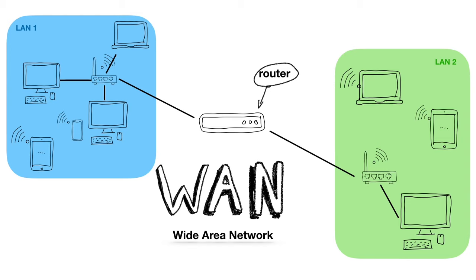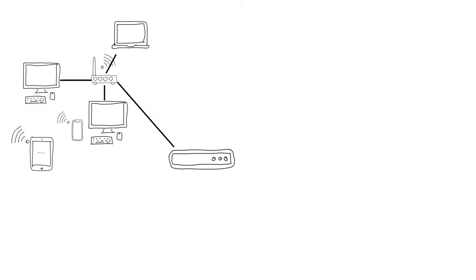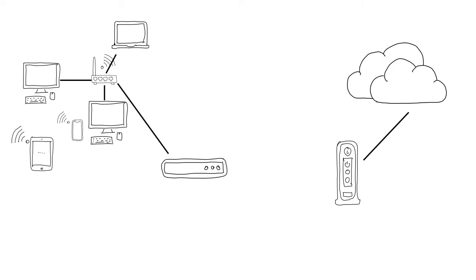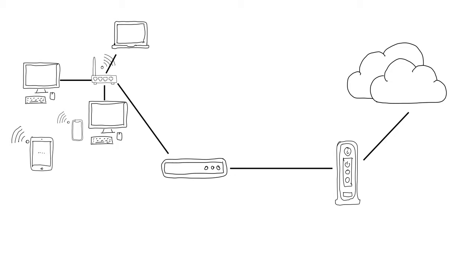At this moment, we're still not connected to the internet. We are connected locally to all the other devices in our home, and we're in the same Wide Area Network with, for instance, some of the neighbors. To connect to the internet, we need a third device: a modem. A modem transforms the signals from our UTP cables or Wi-Fi waves to signals that can be sent through telephone lines or TV cables. That way, your signals can reach almost any place on earth.